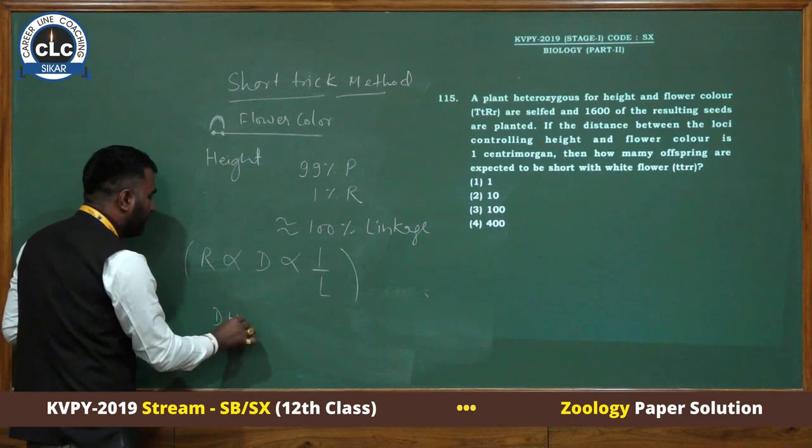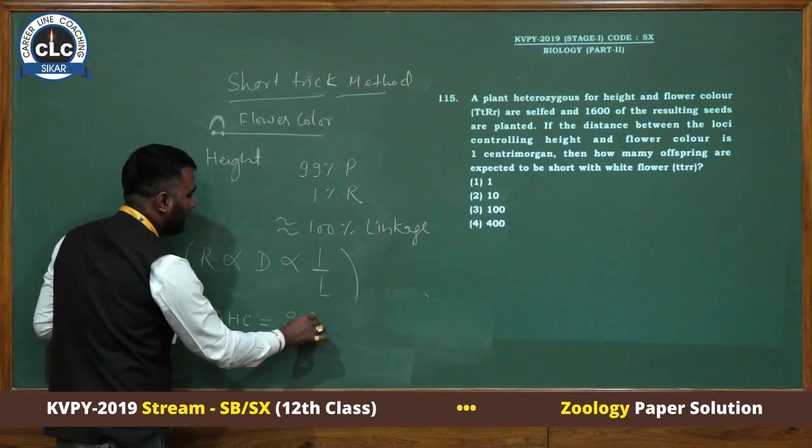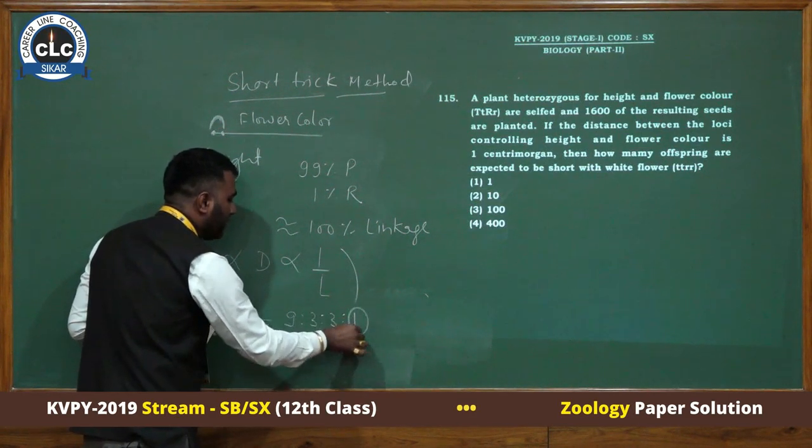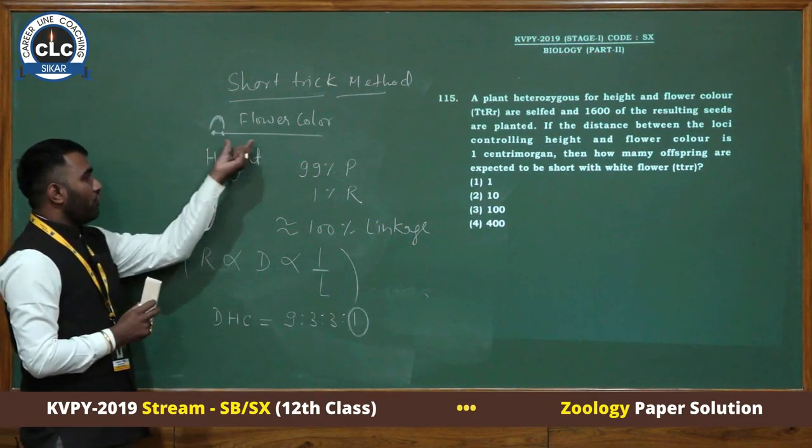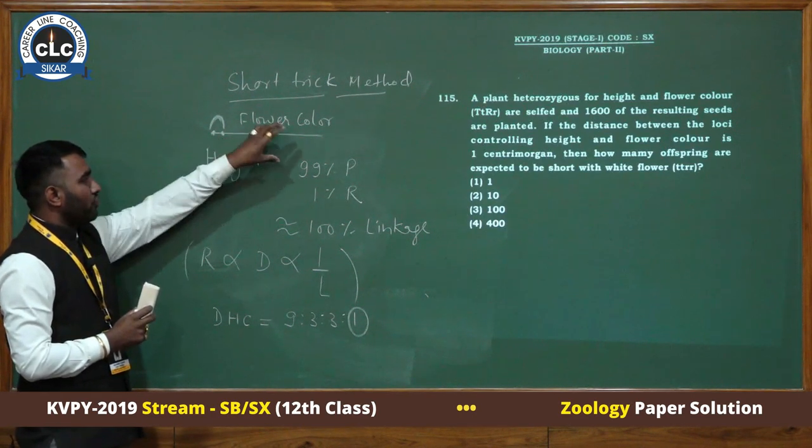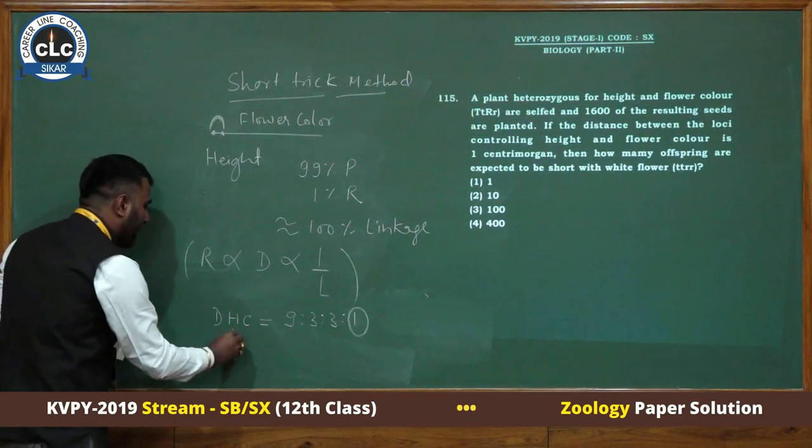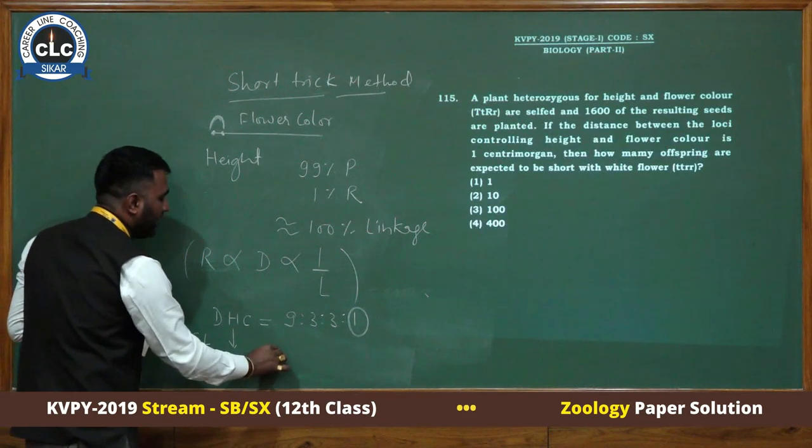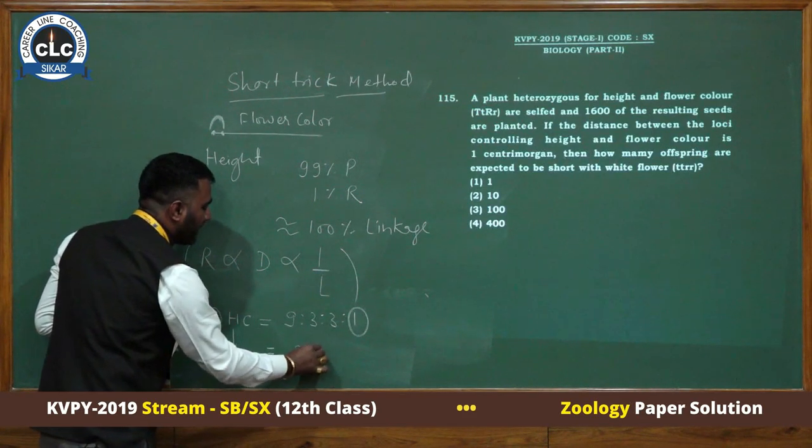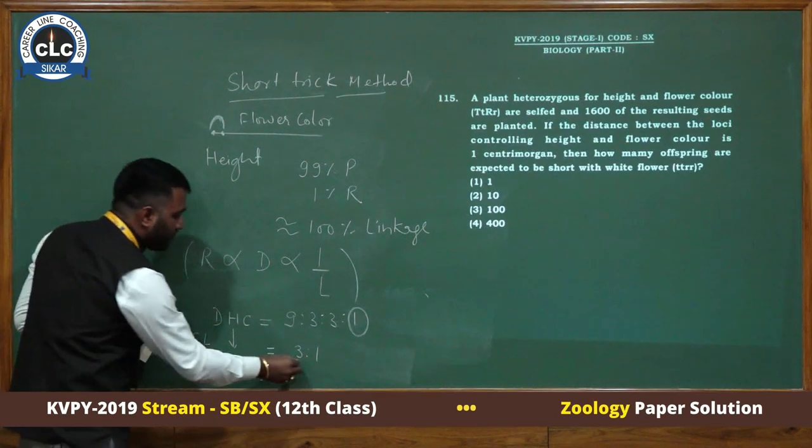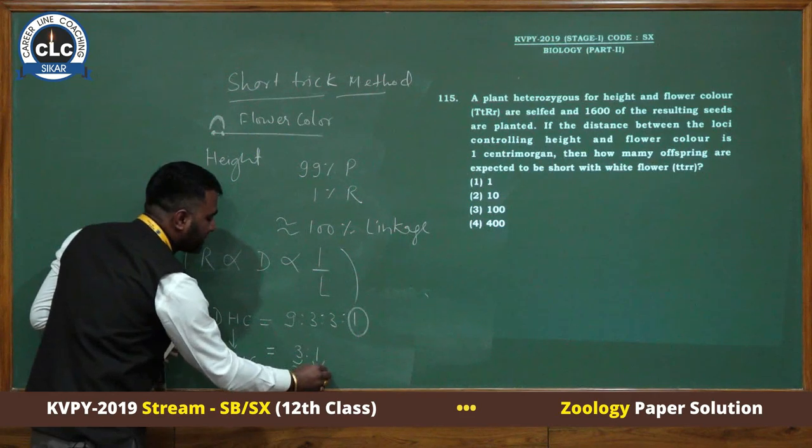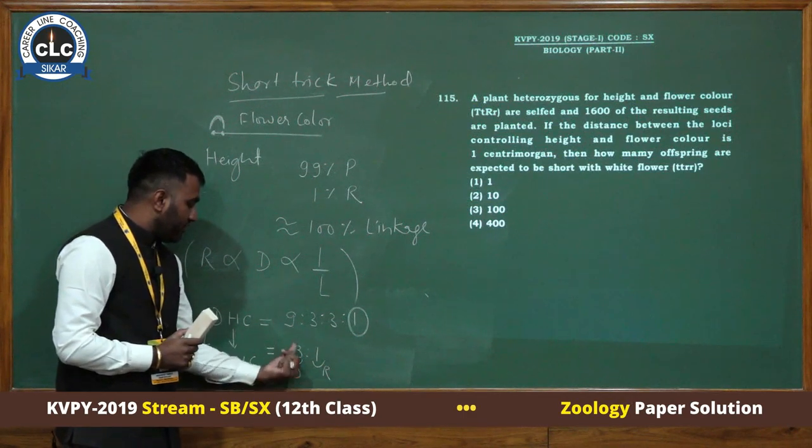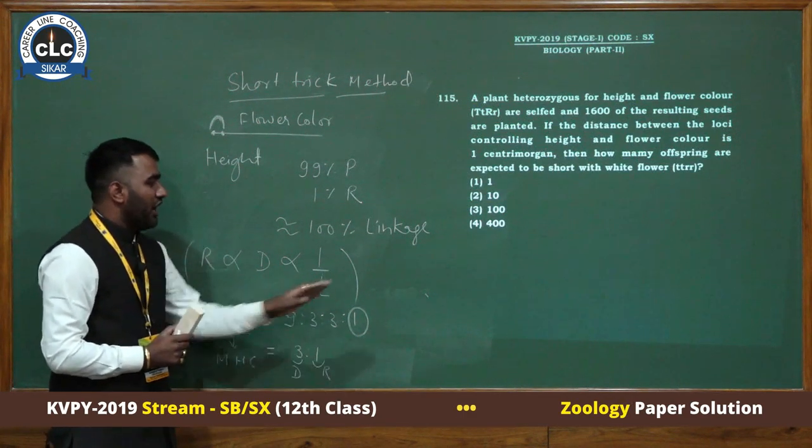We can assume almost 100% linkage. In a dihybrid cross, the normal ratio is 9:3:3:1, where the double recessive value is 1. But when both characters are on the same chromosome rather than different chromosomes, we treat them as one. The dihybrid with complete linkage behaves like a monohybrid cross with ratio 3:1. This is the dominant value and this is the recessive value.